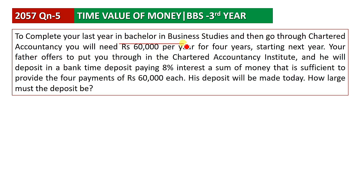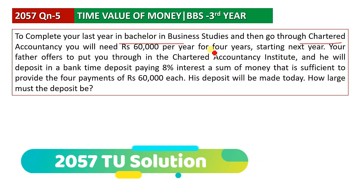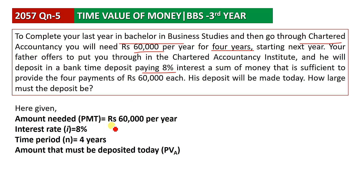The question is set in the context of a Bachelor's last year student who plans to join as a Chartered Accountant next year. Over a period of 4 years, you need to make a payment of 60,000 rupees per year. Your father has agreed to deposit a certain amount today. The interest rate is 8%. How much money do you need to deposit today to make payments for 4 years?